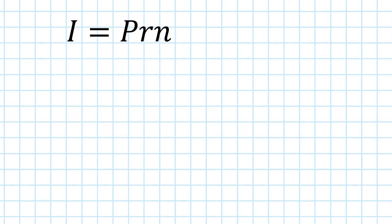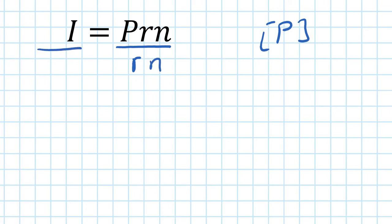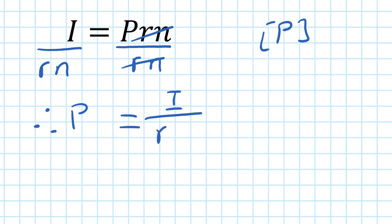I equals Prn. Let's make P the subject — solve for P. Because I want to solve for P, I get rid of rn by dividing by rn on both sides. Therefore P equals I over rn.